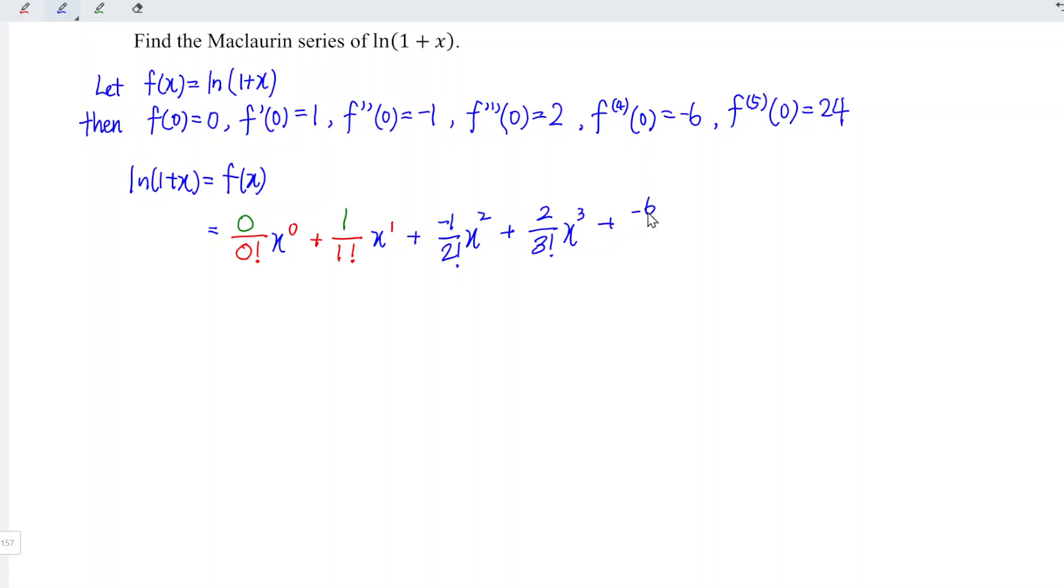2 divided by 3 factorial x to the power of 3. Fourth: minus 6 divided by 4 factorial x to the power of 4. And for the fifth,